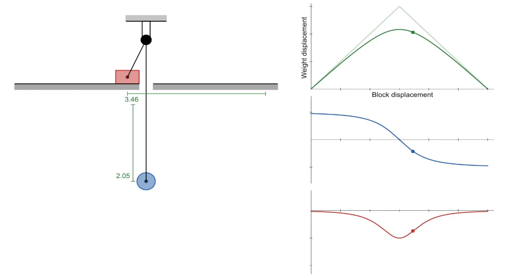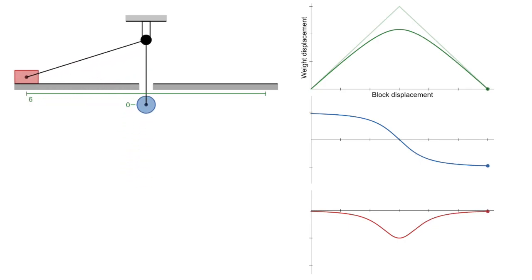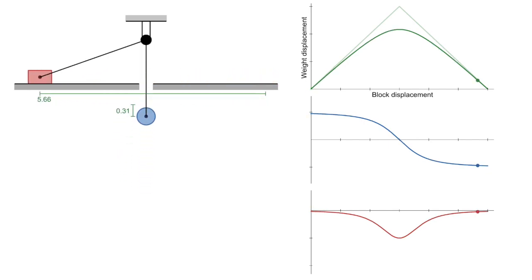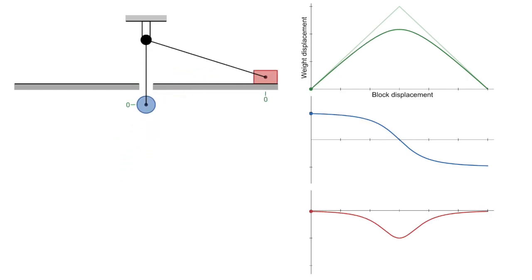And I think that's the key. If the block is always moving further than the weight in any range of its displacement, then, assuming they both started with zero velocity, it has to be accelerating more than the weight. Looking at the bottom graph, we reach the same conclusion. That red line is always below zero, indicating that the acceleration of the weight is always less than that of the block.